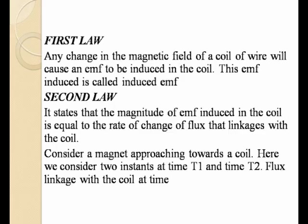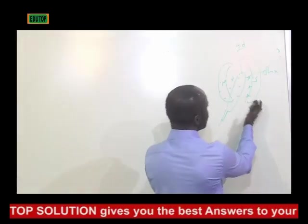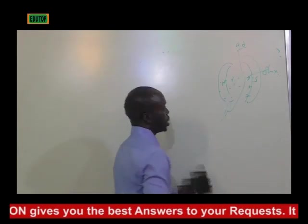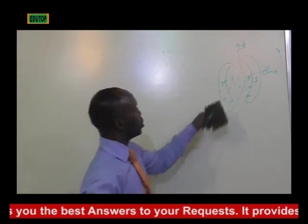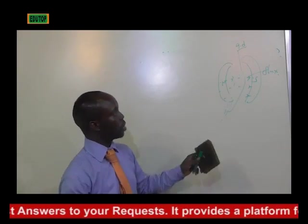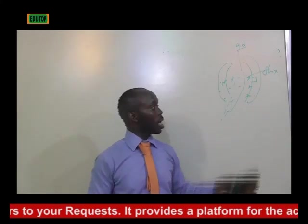Let's go to the first law of Faraday's law. Any change in the magnetic field of a coil of wire will cause an EMF to be induced in the coil. Any change in the magnetic field — let's assume the coils are stationary and the magnetic flux is not trying to link the two magnets.